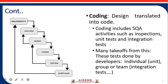The next phase is the coding phase. Whatever the design is done, we translate that design into code. Coding also includes SQA activities — Software Quality Assurance activities — such as inspections, interface checks, and integrations. This is done by the developers, individual team members, or the team through integration testing.